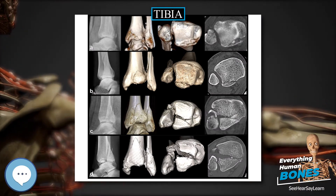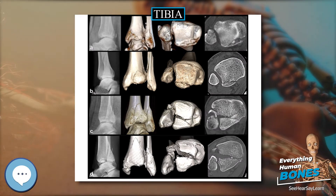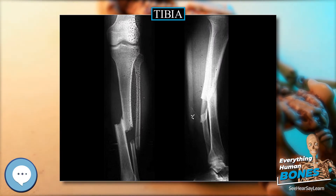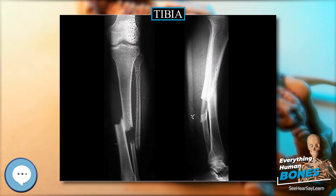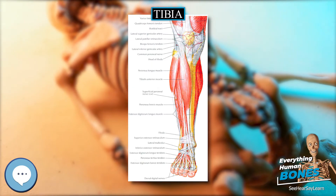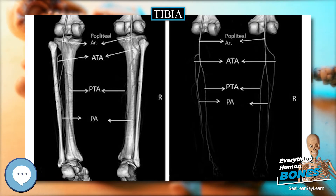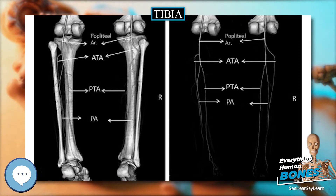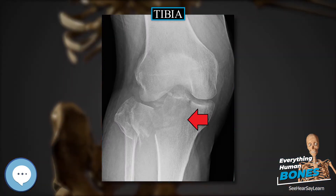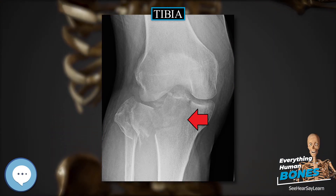Posteriorly, the condyles are separated from each other by a shallow depression, the posterior intercondyloid fossa, which gives attachment to part of the posterior cruciate ligament of the knee joint. The medial condyle presents posteriorly a deep transverse groove for the insertion of the tendon of the semimembranosus. Its medial surface is convex, rough, and prominent; it gives attachment to the medial collateral ligament.